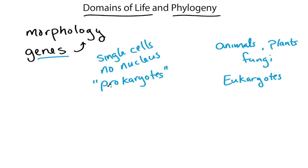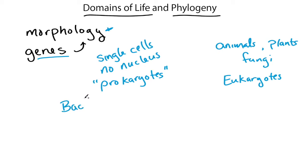This first division was based on morphology, but in the 1970s, when people started being able to characterize the genes, they realized that this group of prokaryotes is really two genetically very different groups of organisms. So we have the bacteria — a term from before — but we also have the archaea.